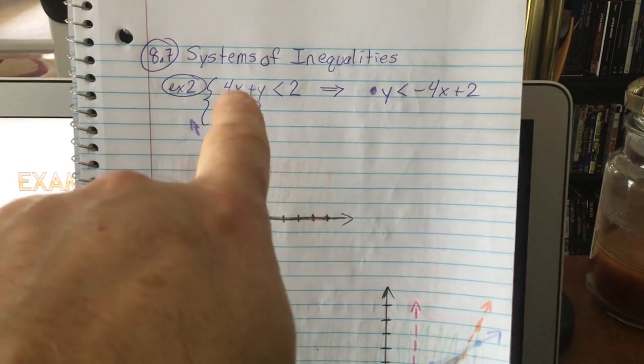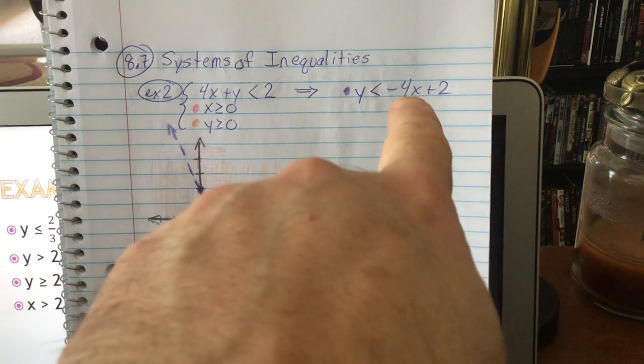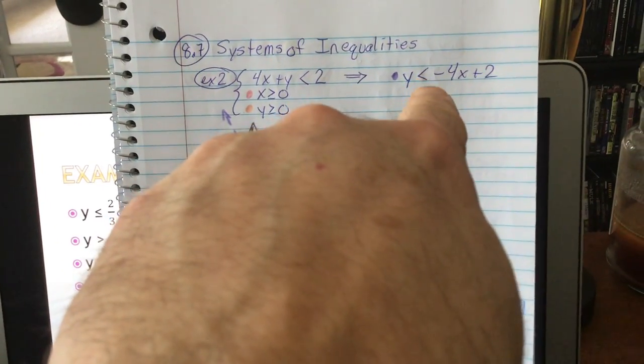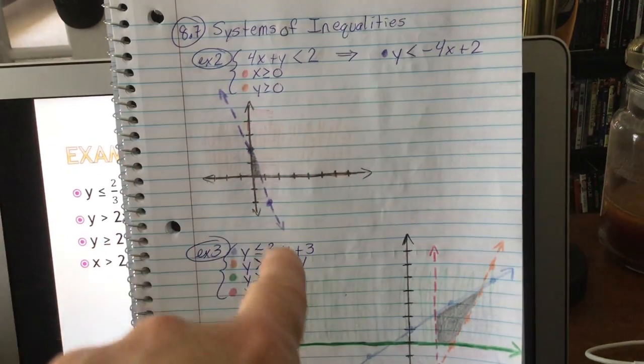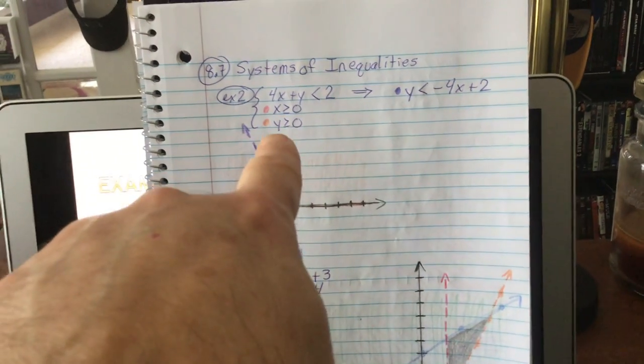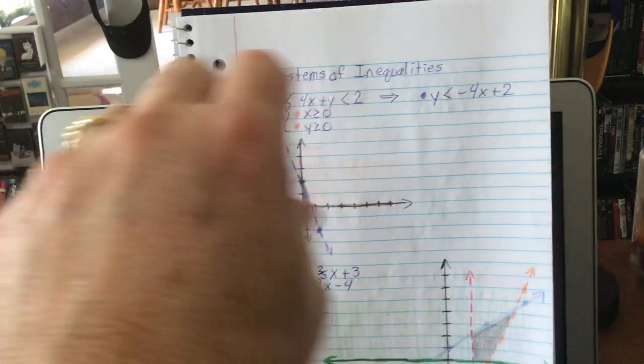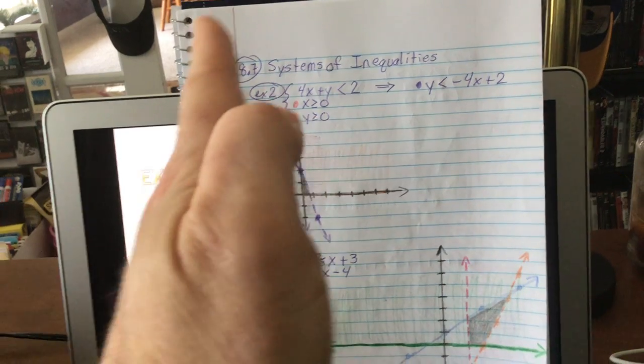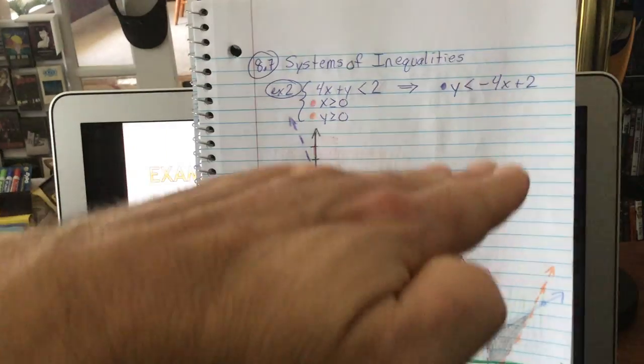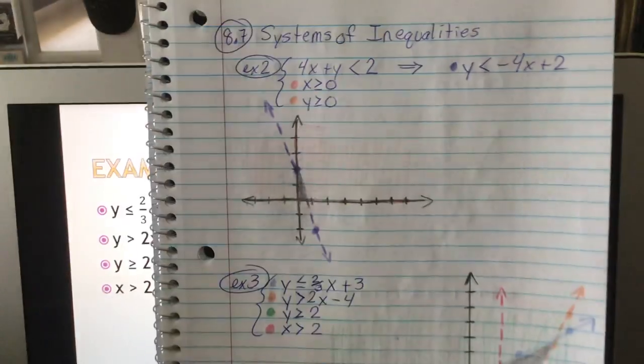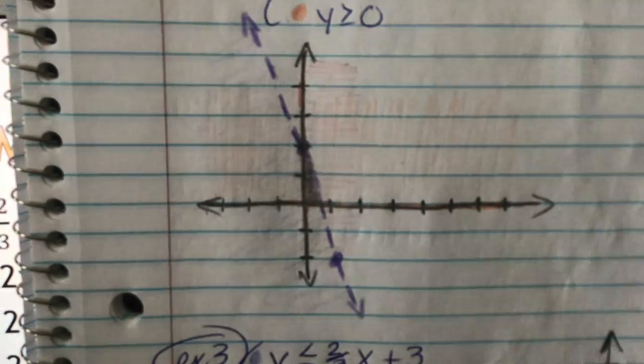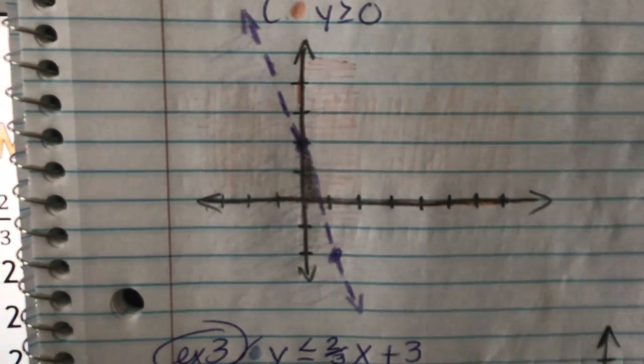Example two, I only had one of them that needed to be put into slope-intercept form. So I did that, graphed that one in purple. It's a dashed line because it doesn't have or equal to, starts at two and goes down four and over one. So there it is right there. And then the other two in this case are just restricting me into the first quadrant. X greater than or equal to zero means I'm over here. It's red. And then Y greater than or equal to zero is above the X axis. So it's in orange. And so then the final shaded region you can see is that little triangular region right there in the middle where all three of them overlap.